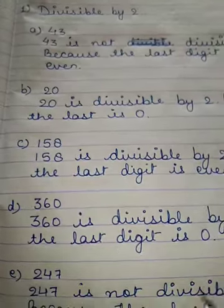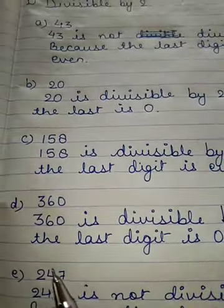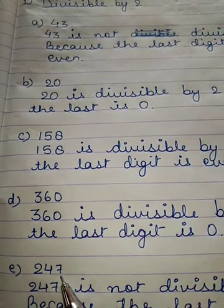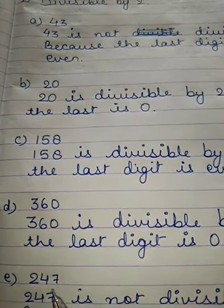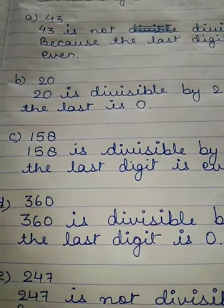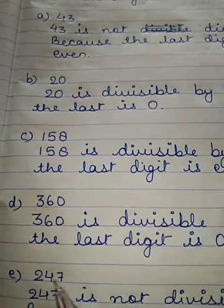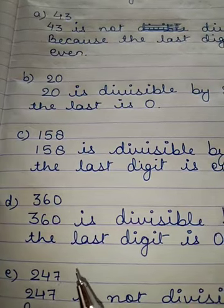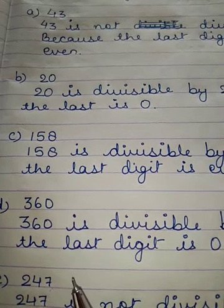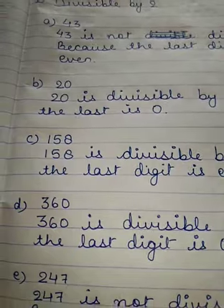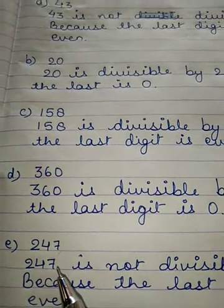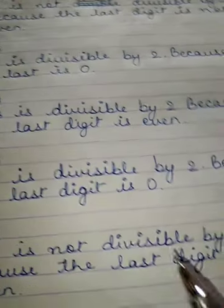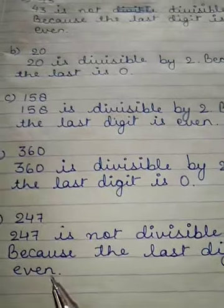Then, question number E: 247. You can see 7 is not an even number and it is not the same as 0, 2, 4, 6, or 8. So, 247 is not divisible by 2. We will write in the solution that 247 is not divisible by 2 because the last digit is not even.